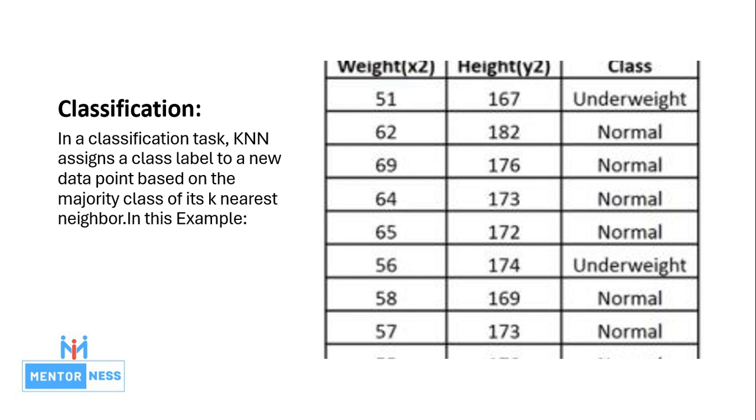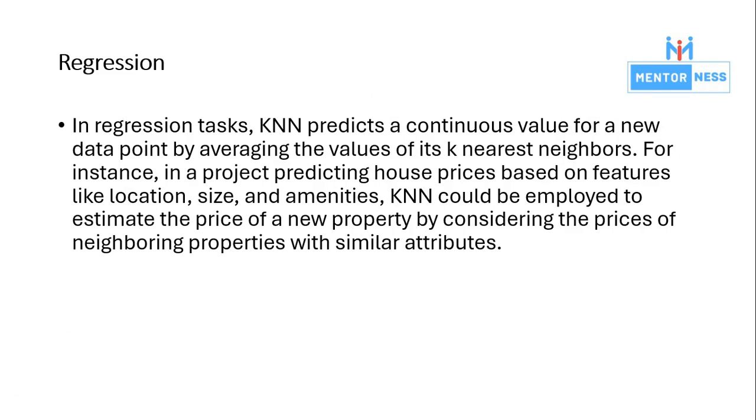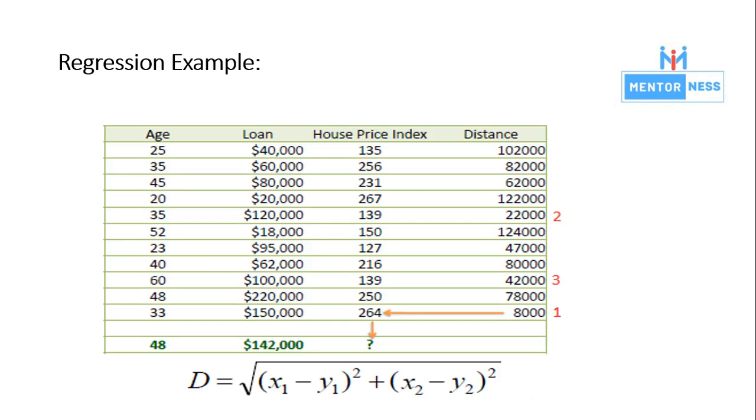What is regression? In a regression task, KNN predicts a continuous value for a new data point by averaging the values of its K nearest neighbors. For example, we have a project like predicting house prices based on features.